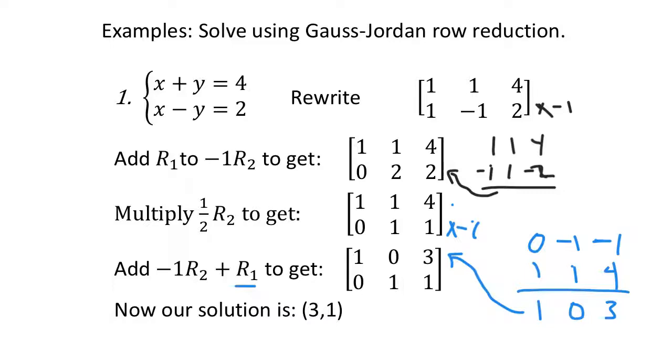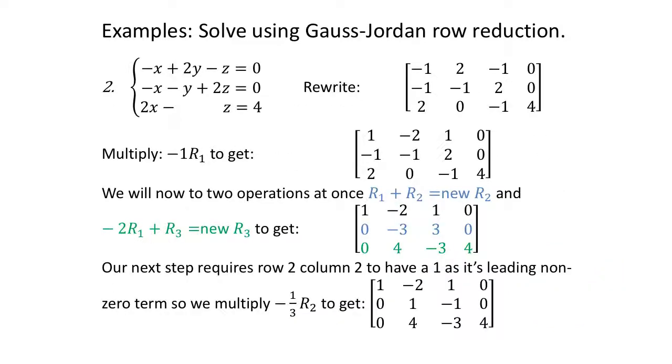Now we have three equations and three variables. -x + 2y - z = 0 becomes -1, 2, -1, 0. Second equation, -x - y + 2z = 0 becomes row 2: -1, -1, 2, 0. And equation 3, 2x - z = 4 becomes 2x's, 0y's, but don't forget that negative that goes with the z: -1, and 4.